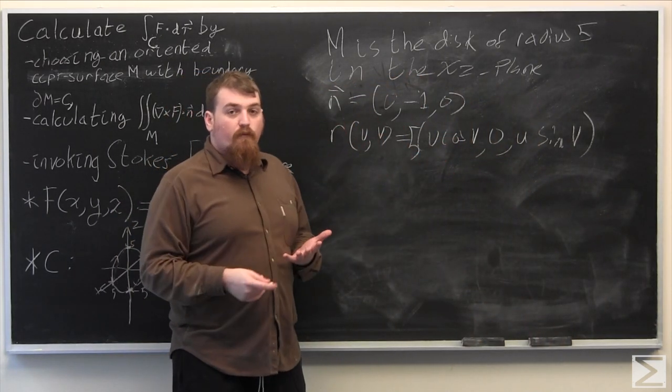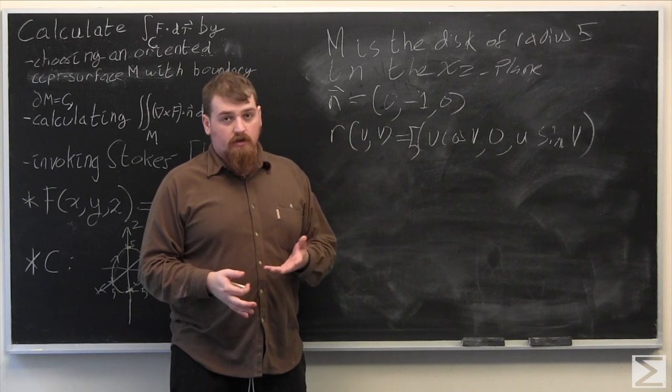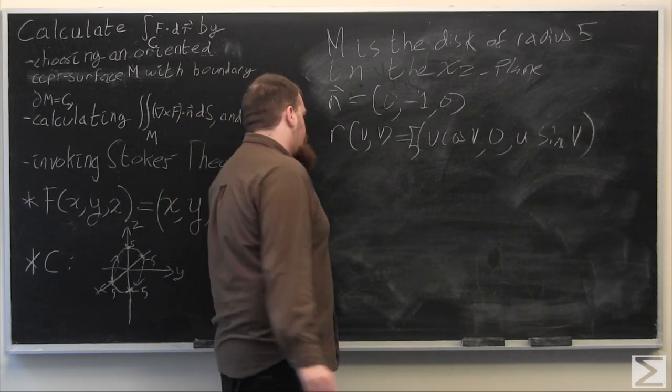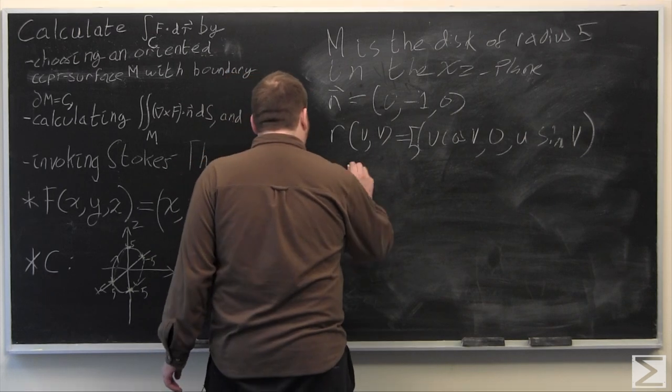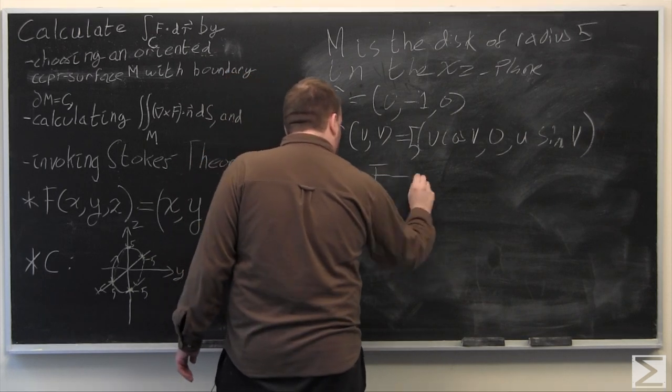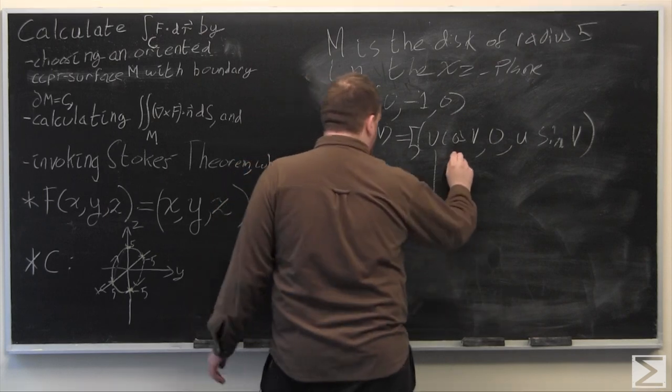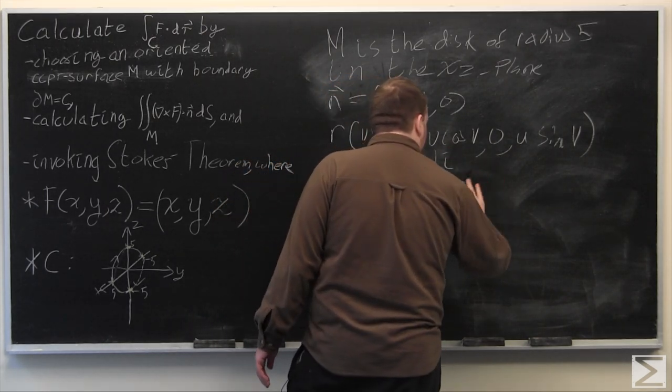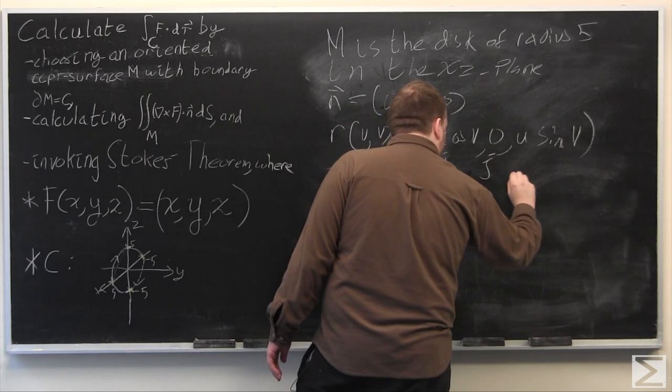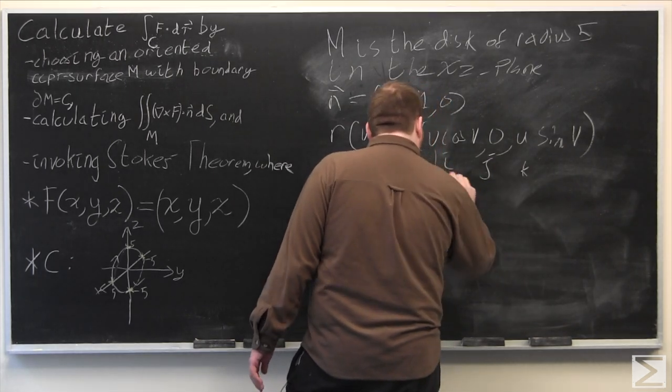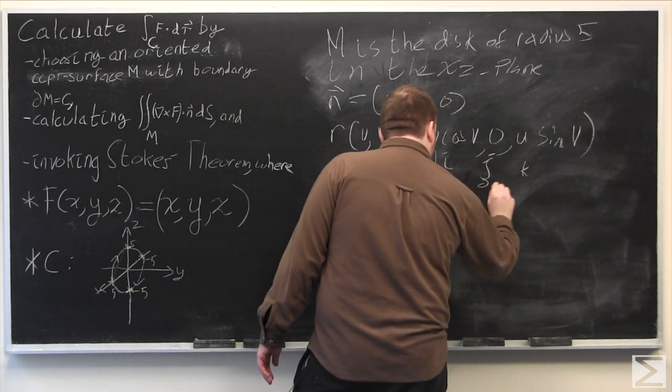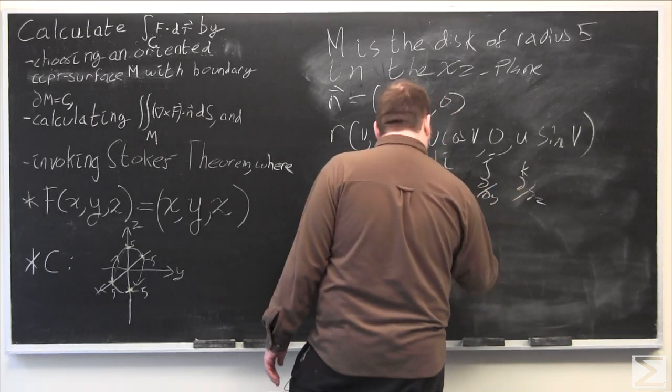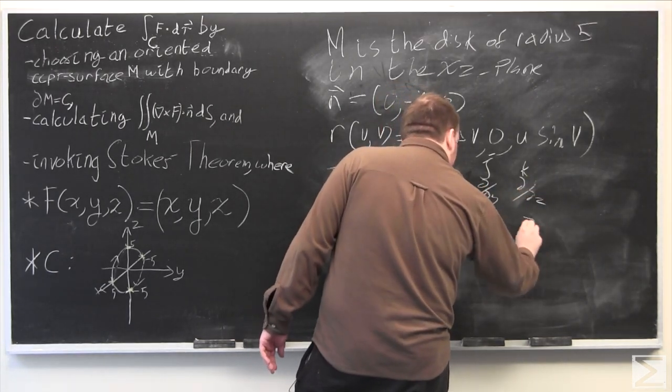Because what we want to do is calculate the flux of the curl of f through m. And in order to do this, we find the curl of f, curl times f equals, this is the determinant or determinant-like function i, j, k, partial by partial x, partial by partial y, partial by partial z, x, y, z.